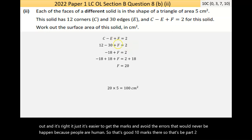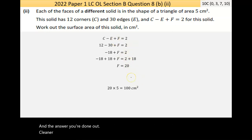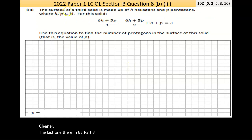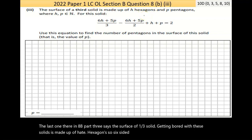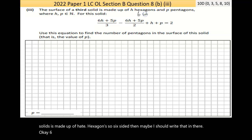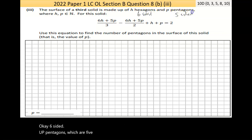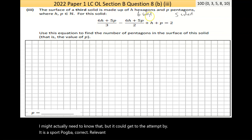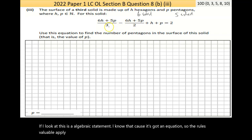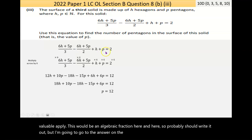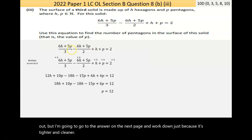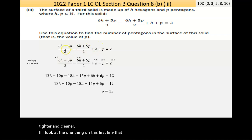Part B3: The surface of a third solid is made up of h hexagons (six-sided) and p pentagons (five-sided). This is an algebraic statement with algebraic fractions. To eliminate the fractions, I'll multiply through by the lowest common multiple of 3 and 2, which is 6.